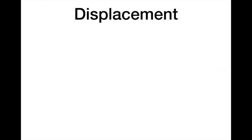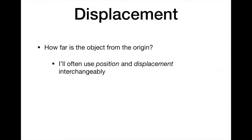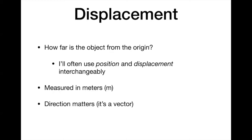Let's start by defining some physics terms. Displacement is how far an object is from the origin. The origin is just where you call the position equal to zero — that's a choice you make, or sometimes it'll be given in the problem. When driving a race car, it makes sense to call the starting line the origin. Position and displacement I use interchangeably: where are you right now? It's measured in meters in this class using SI metric units. Direction matters — it's a vector, something that has both a number and a direction.